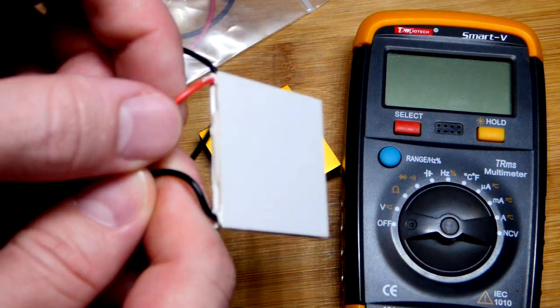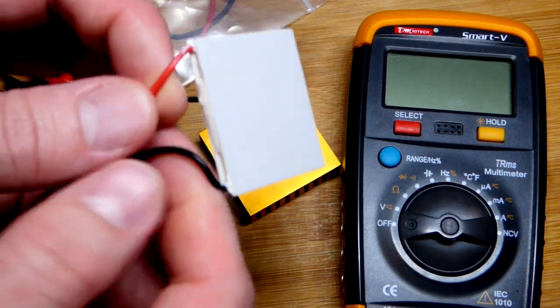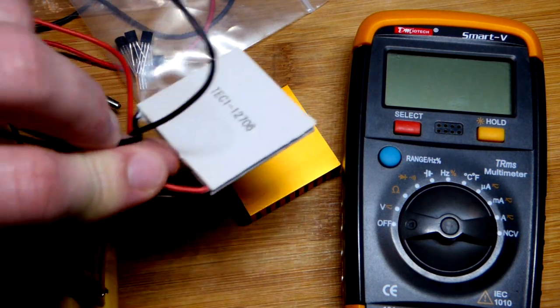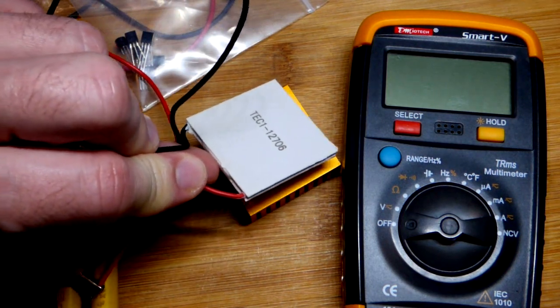If we connect the power supply, positive there and negative there, I think that's the side that gets hot and that's the side that gets cold. We need to dissipate the heat, so I have these heat sinks there.